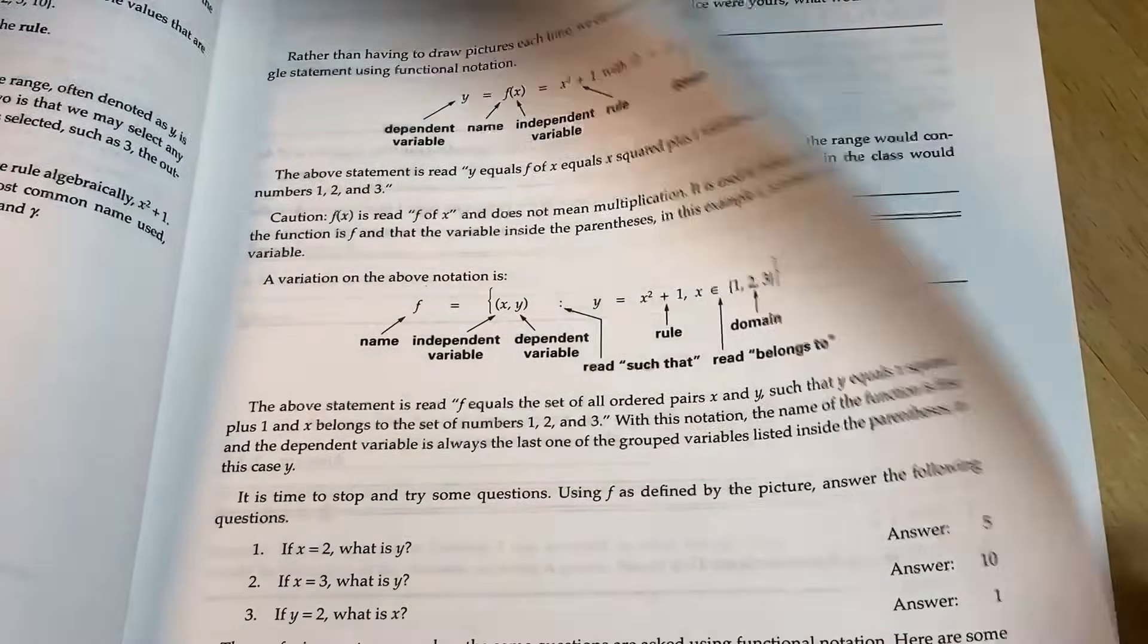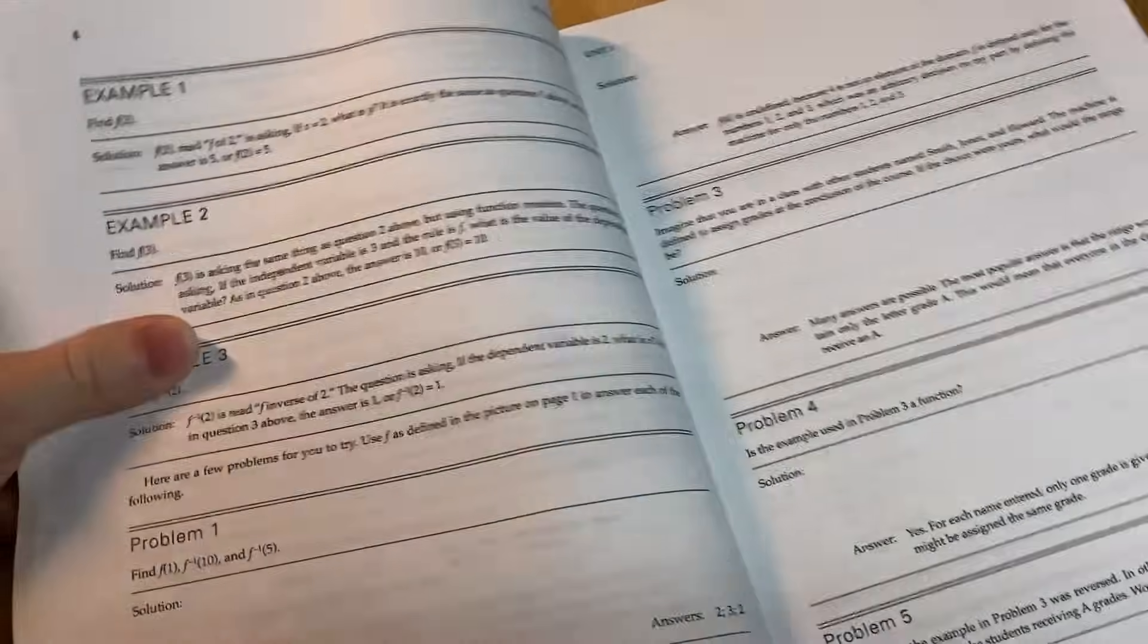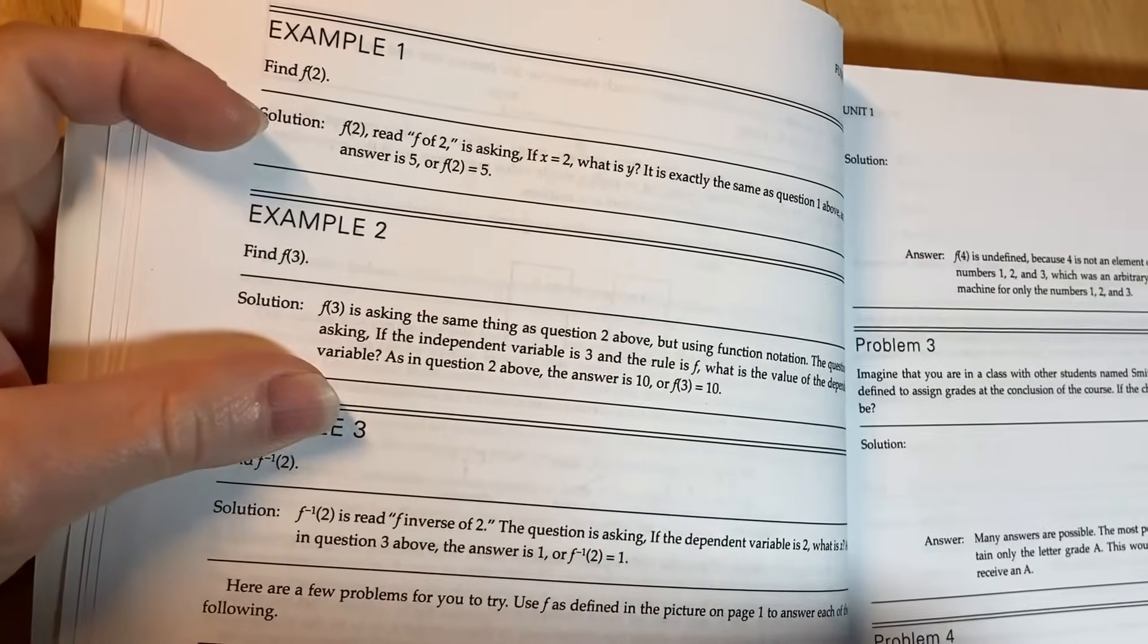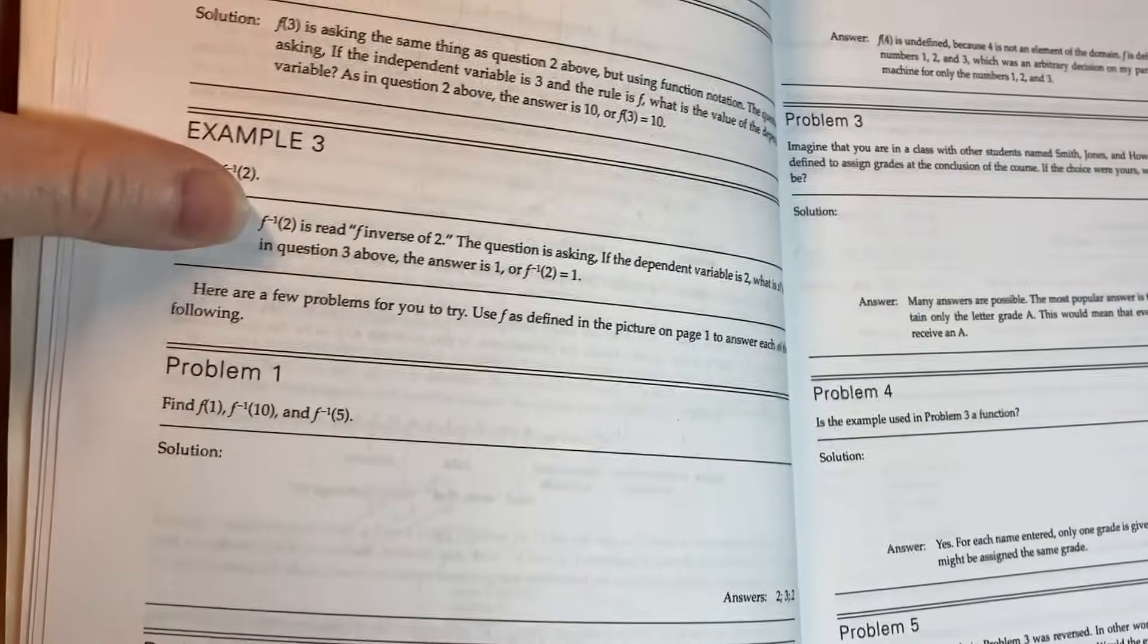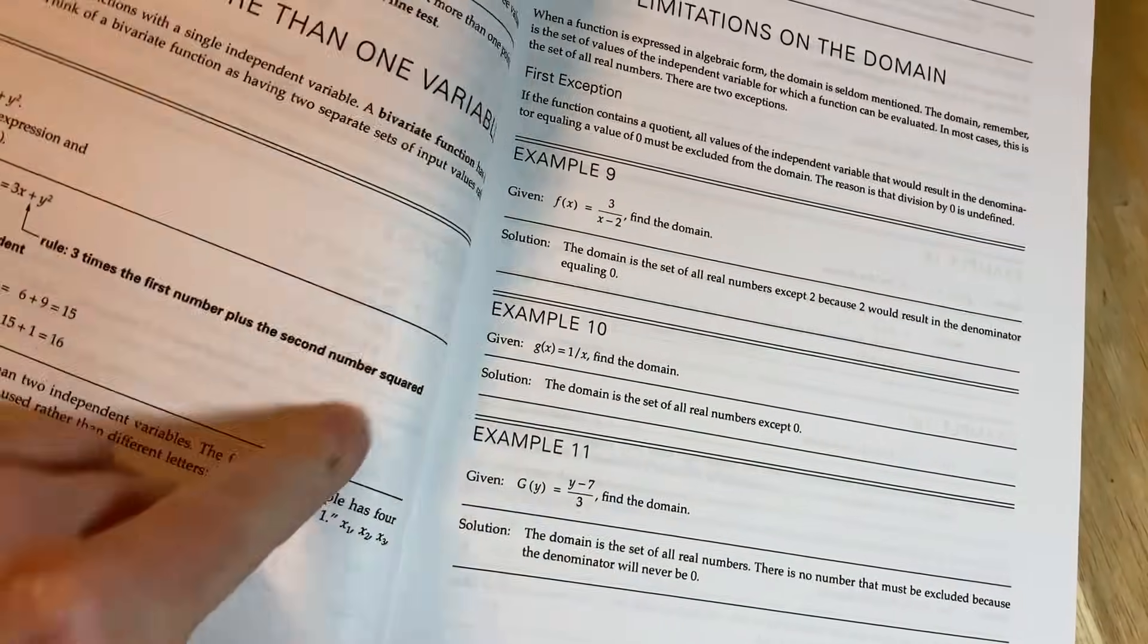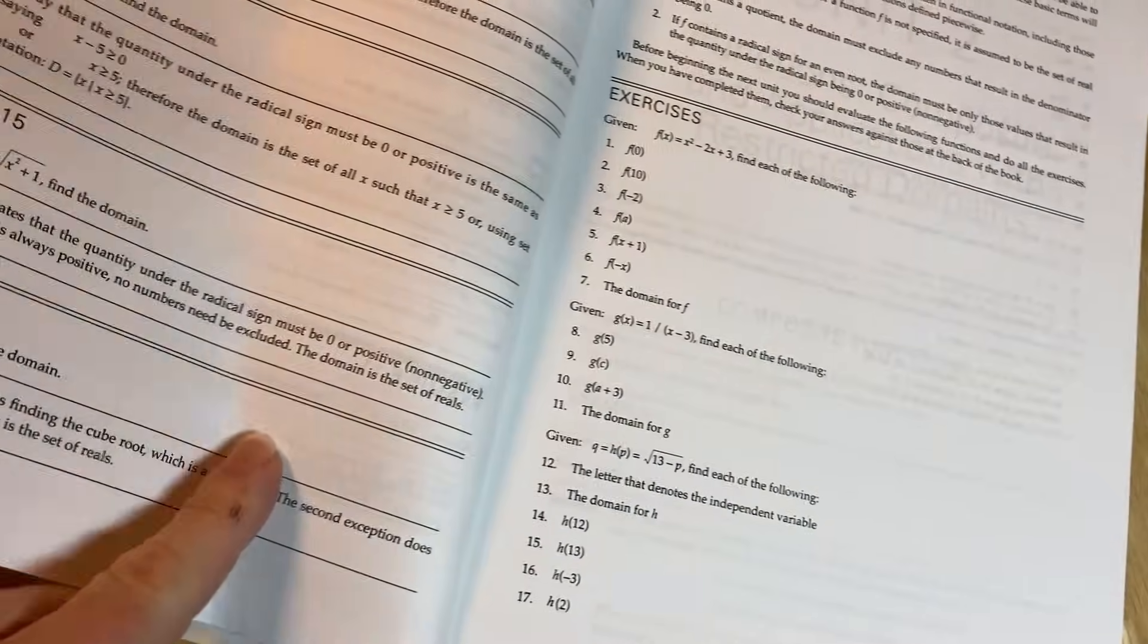And then what happens is you learn some stuff you read and then right away it jumps to examples. Look at all of these examples you have here. So you have lots of examples and you have the solution right below it. So you work through all these examples. Tons of examples. Let's turn the page, more examples, then more examples. And it's just like little subsections. It's just examples and examples and examples.